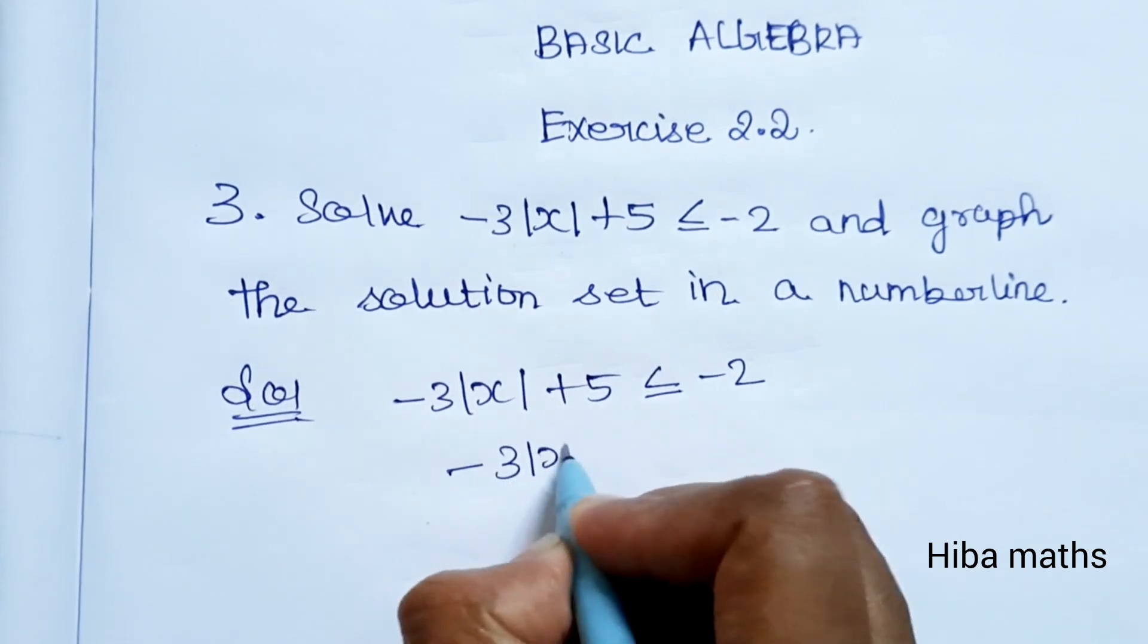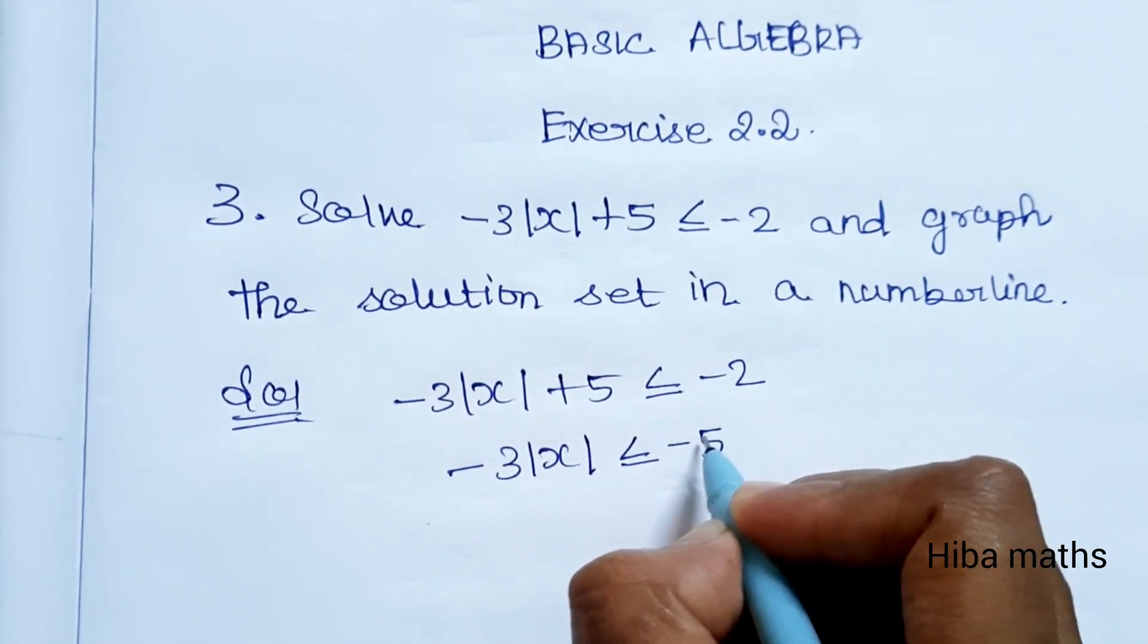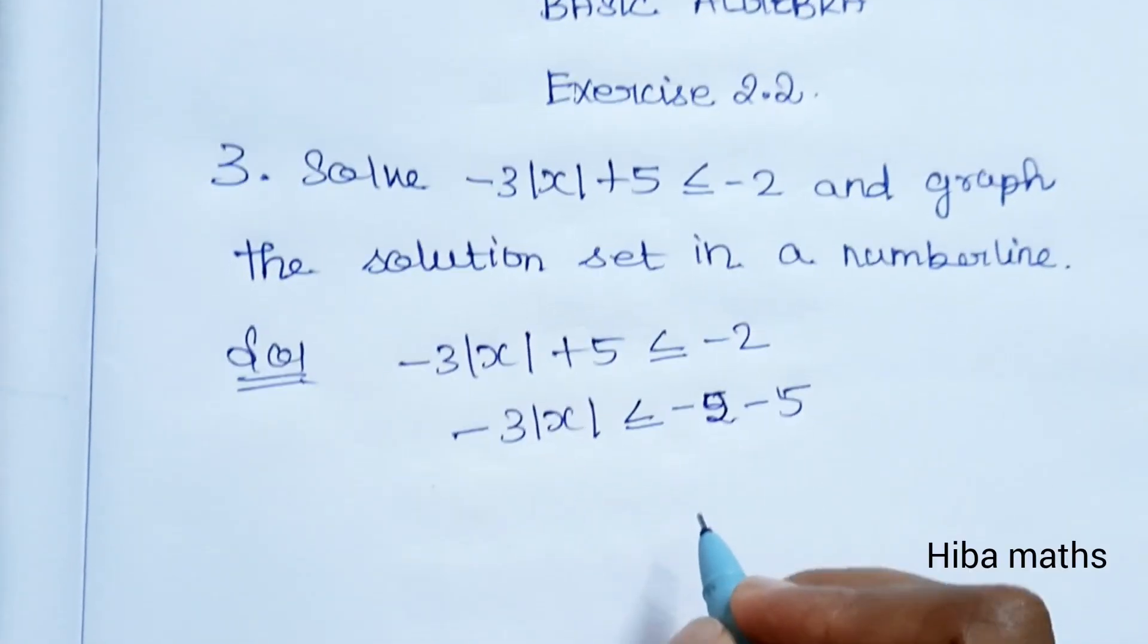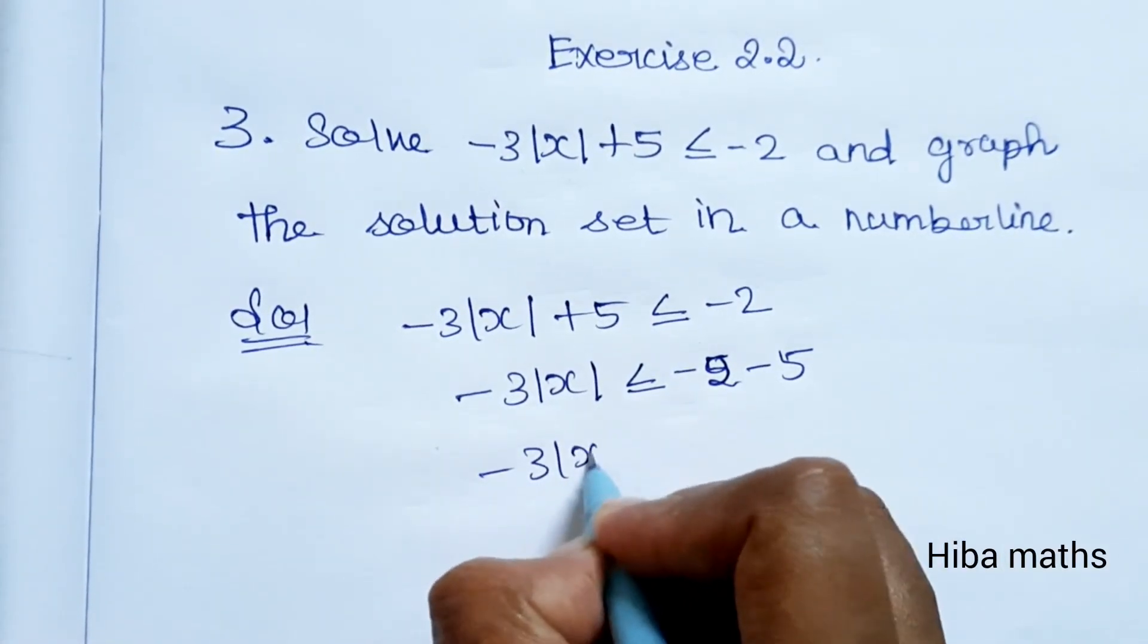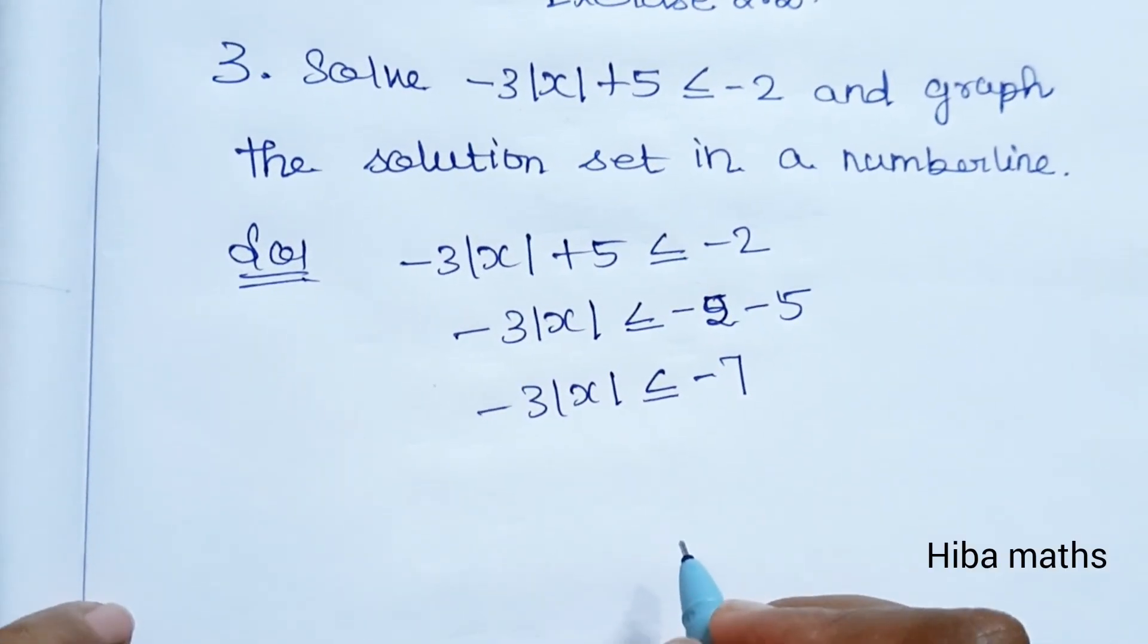First, we move +5 to the other side, so it becomes -5. Minus 2 minus 5 gives us -7. So -3|x| ≤ -7.